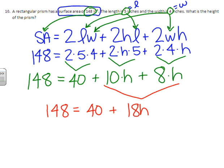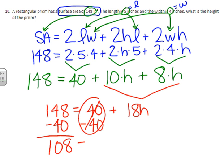And now we're just going to solve a two-step equation. So subtract 40 from each side. Here's your zero pairs. So we've got 108 equals 18 H. Now we need to divide both sides by 18.